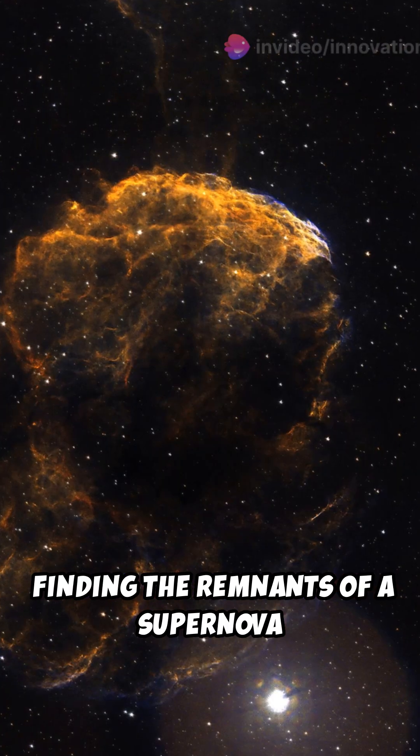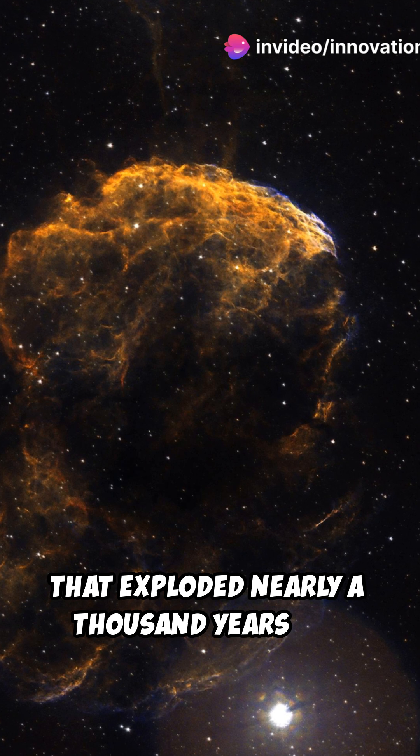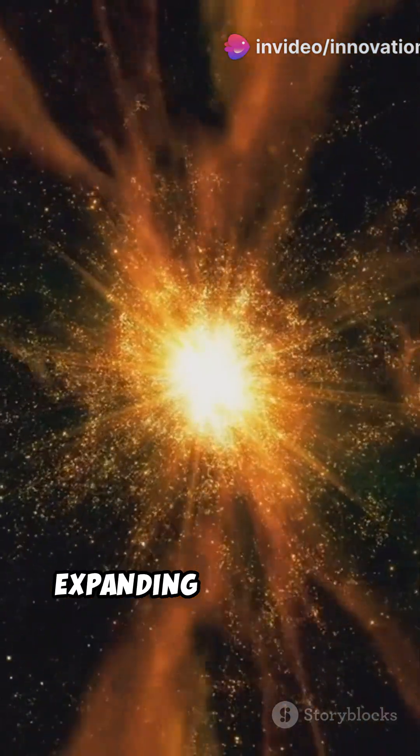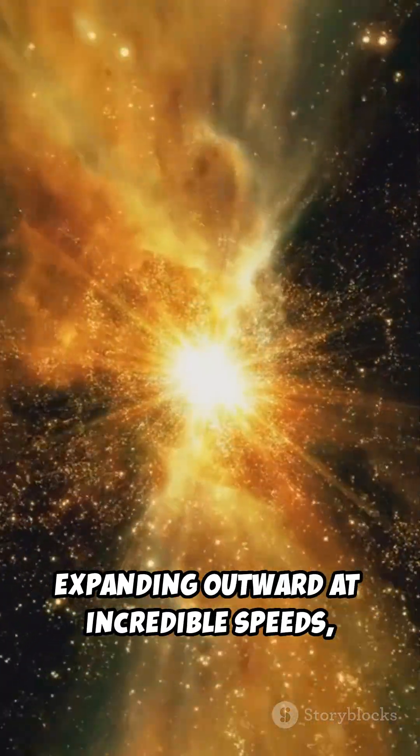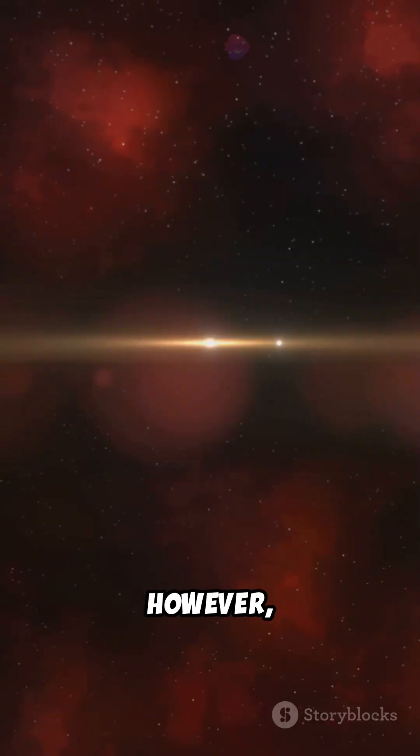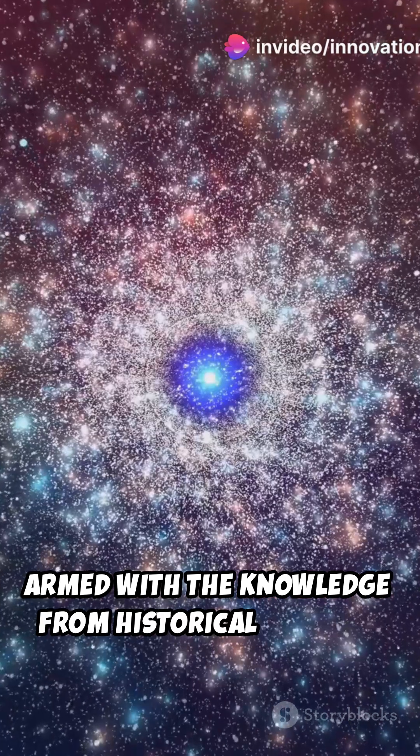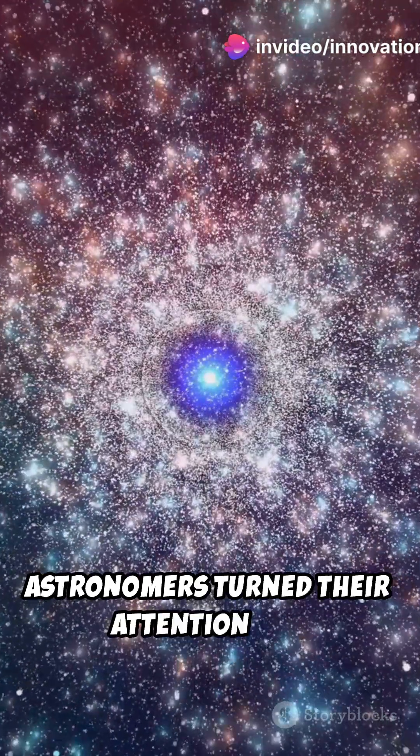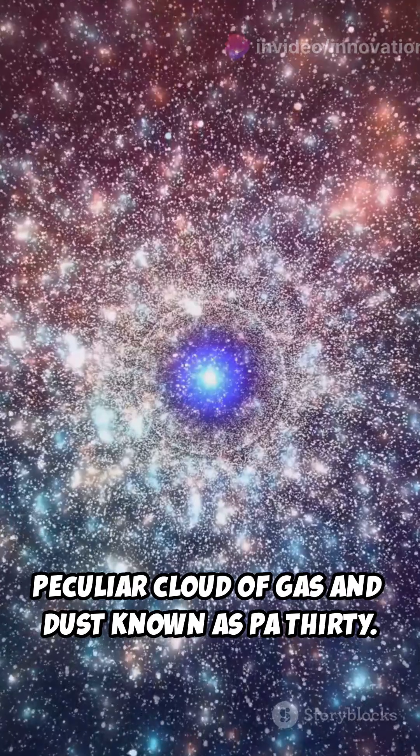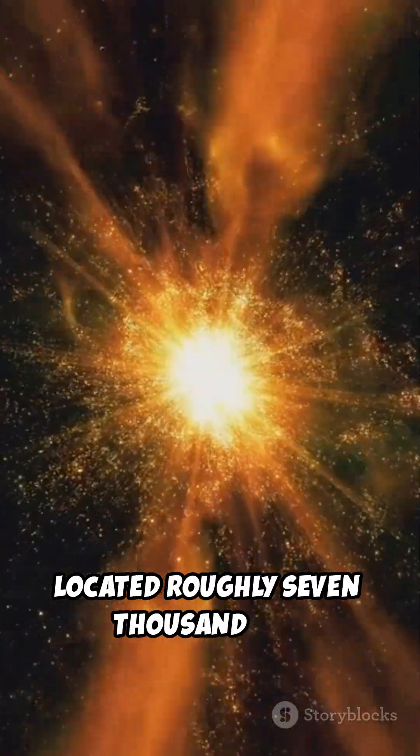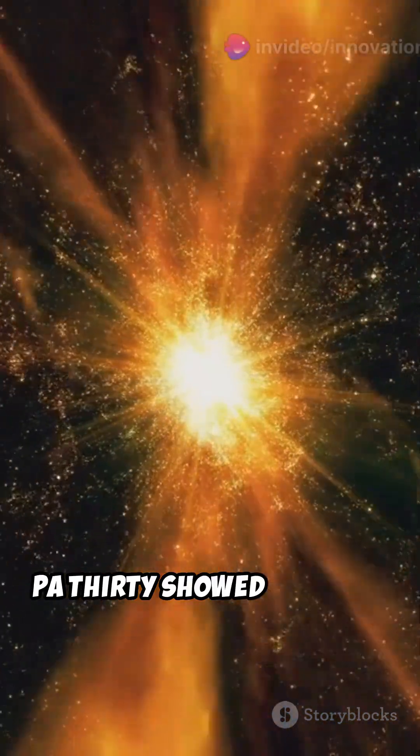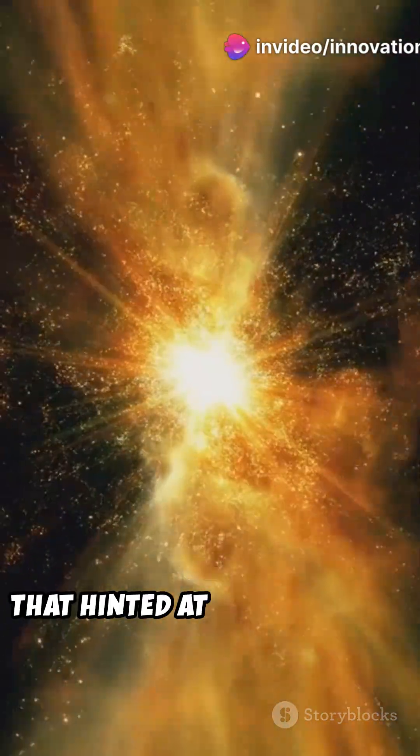Finding the remnants of a supernova that exploded nearly a thousand years ago is no easy feat. The debris from such events, expanding outward at incredible speeds, becomes incredibly diffuse and difficult to detect over time. However, armed with knowledge from historical records, astronomers turned their attention to a peculiar cloud of gas and dust known as Pa 30. Located roughly 7,500 light-years away in the constellation Cassiopeia, Pa 30 showed unusual characteristics that hinted at a violent past.